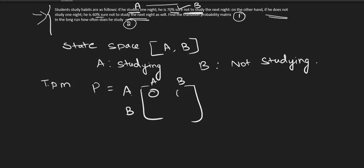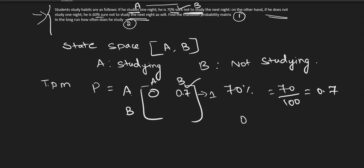A to B is 0.7 because 70% means 70 divided by 100, which equals 0.7. But you cannot say that if he studies one night, he will definitely not study the next night. The total sum of each row is always 1. So 0.7 plus something equals 1, therefore x equals 1 minus 0.7 which is 0.3. So A to A is 0.3.